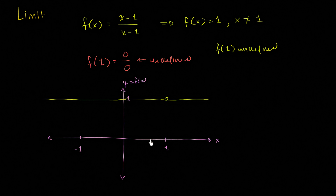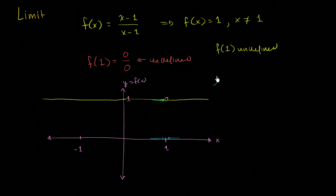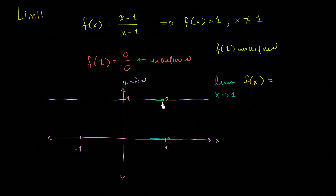As x gets closer and closer to 1, what is the function approaching? This entire time, no matter how close you get to 1 — as long as you're not at 1 — you're actually at f of x equals 1. From the right-hand side you get the same thing. So we could say that the limit — LIM short for limit — as x approaches 1 of f of x is equal to 1. We can get infinitely close to 1, as long as we're not at 1, and our function is going to be equal to 1.